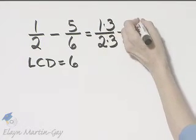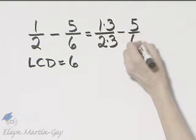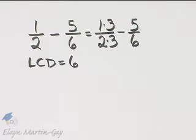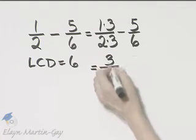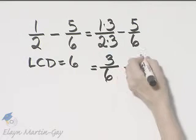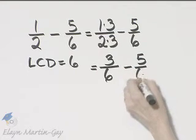Now let's subtract 5/6. We already have a denominator there of 6. So let's see what we have: 1 times 3 is 3 over 2 times 3 is 6 minus 5 over 6.